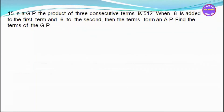Number 15. In a GP sequence, the product of 3 consecutive terms is 512. When 8 is added to the first term and 6 is added to the second term, the terms form an AP sequence.